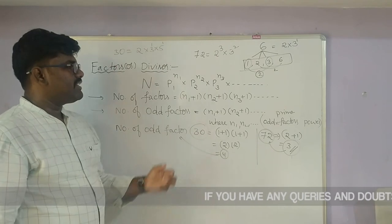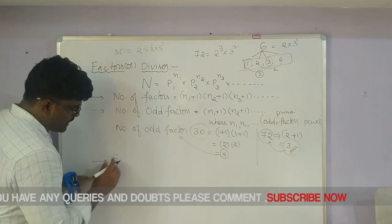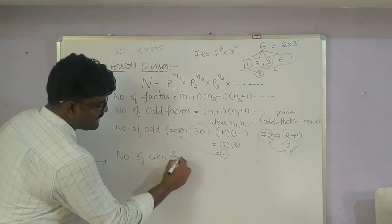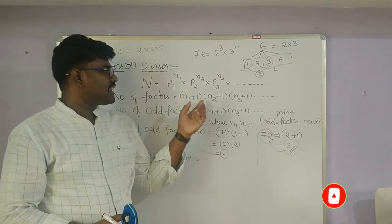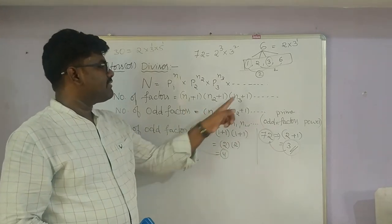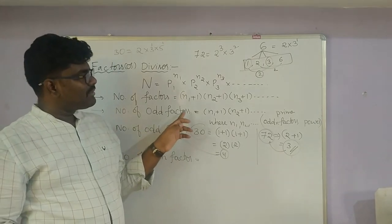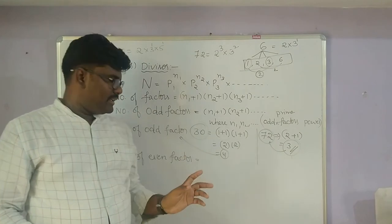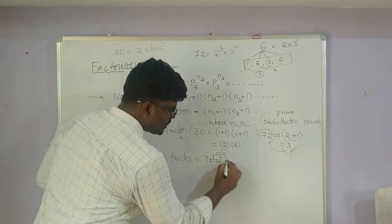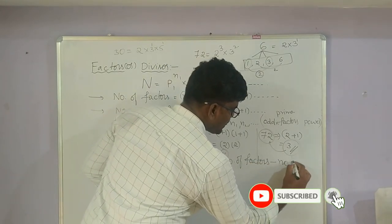Now we want to find the number of even factors. The number of even factors = total number of factors minus number of odd factors. When you know the total factors and subtract the odd factors, what remains are the even factors only.